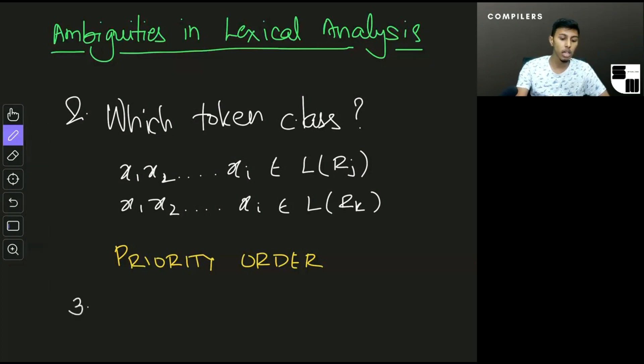So what if no rule matches? In this scenario, what's done is we also have an error class in our token classes, and we know that anything that doesn't match any of the other classes matches the error class. And what we do is we employ a trick which actually simplifies our work.